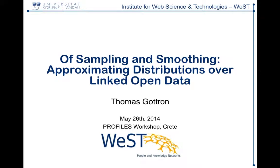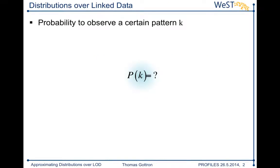Hello and welcome. My name is Thomas Gotteron and I'm going to talk about sampling and smoothing for approximating distributions over linked open data. What do I mean when talking about distributions over linked data? I'm interested in certain patterns that you can observe in the data and I want to know how probable these patterns are to observe.